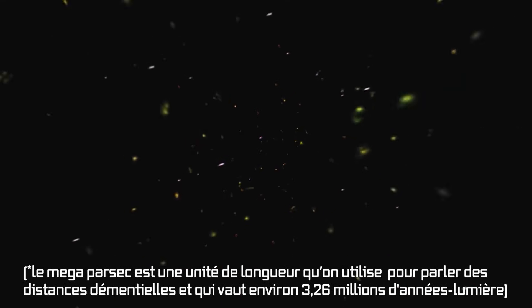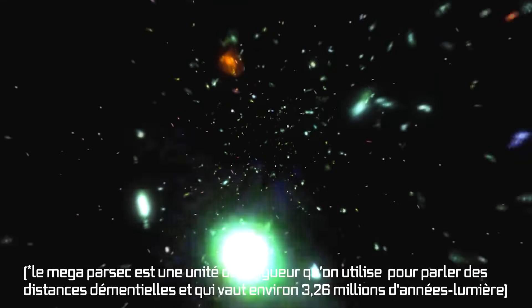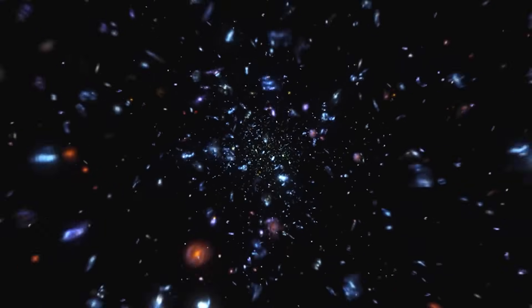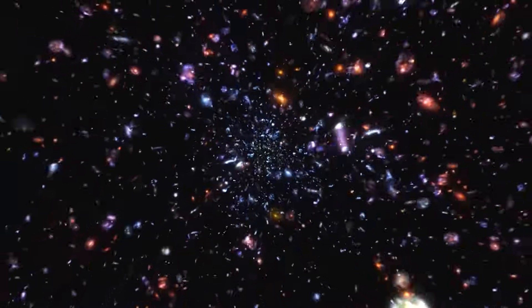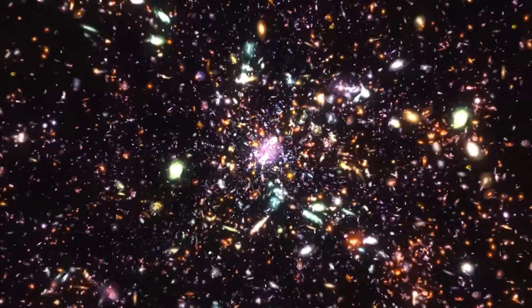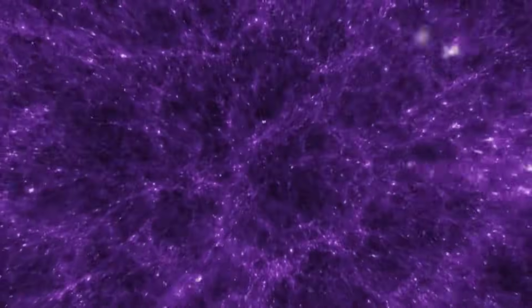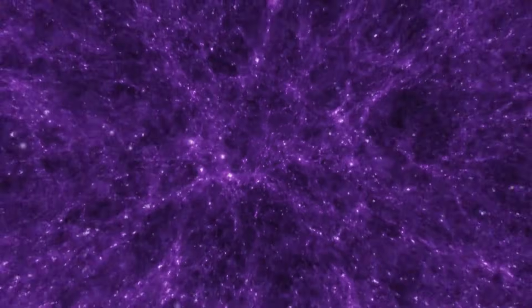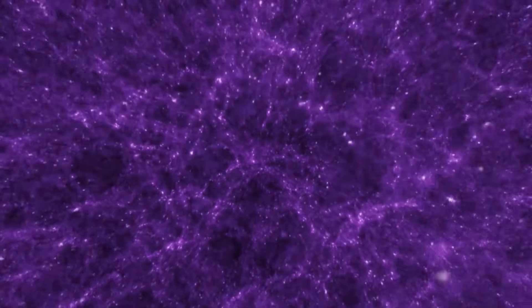Currently, galaxies located at one MPC from us are moving away at 70 kilometers per second, those at two MPC at 140 kilometers per second, those at three MPC at 210 kilometers per second, and so on. Each MPC is an additional 252,000 kilometers that separate us each hour. To these already considerable escape speeds is added the fact that, in the past, the universe was expanding much, much faster than it is today. And that's why our visible universe, which encapsulates all the light that has had time to reach us since the Big Bang, is now 93 billion light-years in diameter. It's big.